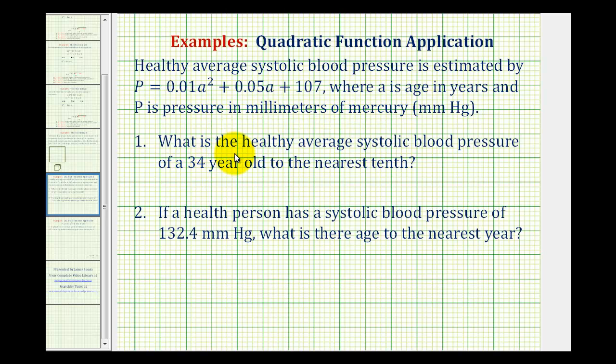Number one, what is the healthy average systolic blood pressure of a 34-year-old to the nearest tenth? So to determine the pressure, we'll substitute 34 for A into our equation. So P of 34 is going to be equal to 0.01 times 34 squared plus 0.05 times 34 plus 107.